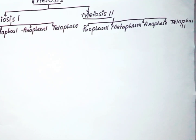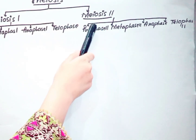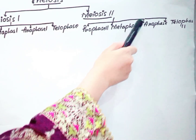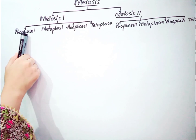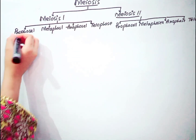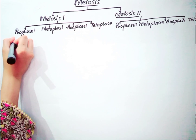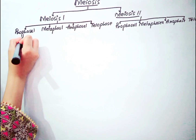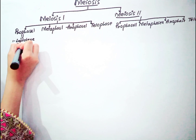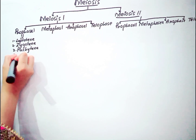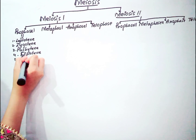In the same manner, meiosis 2 is further divided into prophase 2, metaphase 2, anaphase 2, and telophase 2. This prophase 1 sub-stage of meiosis 1 is further divided into leptotene, zygotene, pachytene, diplotene, and diakinesis.